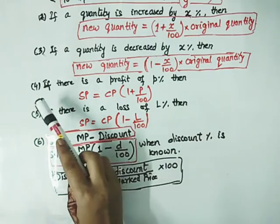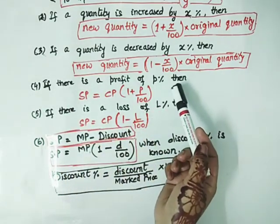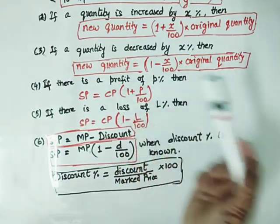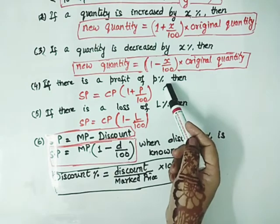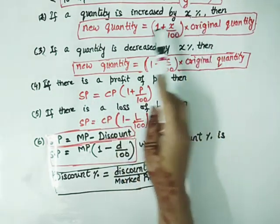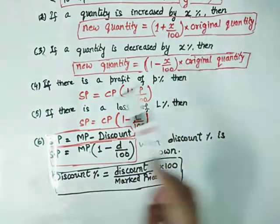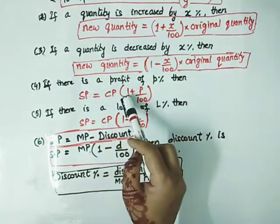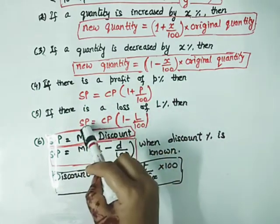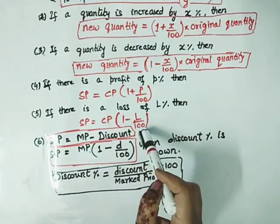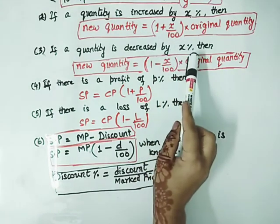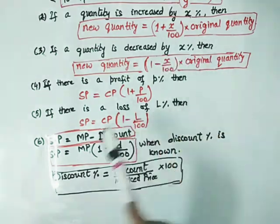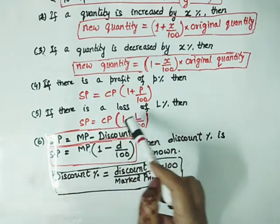Now the fourth formula: if there is a profit of P%, तो selling price का formula है SP = CP into (1 plus P upon 100). जैसे loss होगा, so SP = CP into (1 minus L upon 100). यह formula बिल्कुल वैसे ही है जैसे quantity में x percent decrease करते हैं — new quantity = original quantity into (1 minus x upon 100), वैसे ही loss में SP = CP into (1 minus L upon 100)।